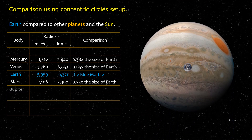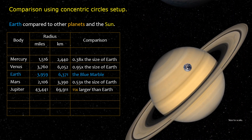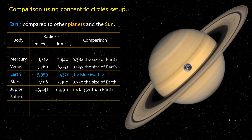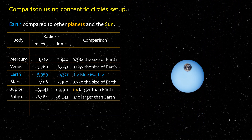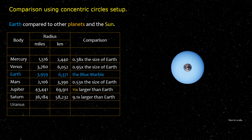Jupiter is 11 times larger than Earth. Saturn is 9.1 times larger than Earth. Uranus is 4 times larger than Earth.